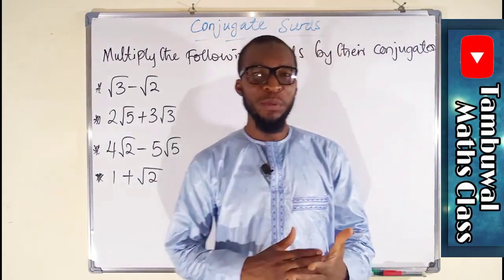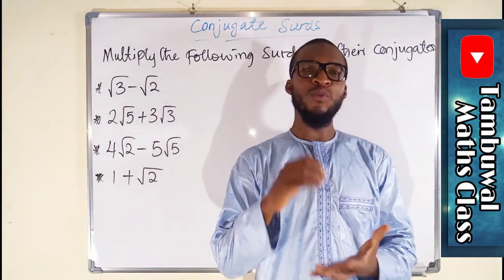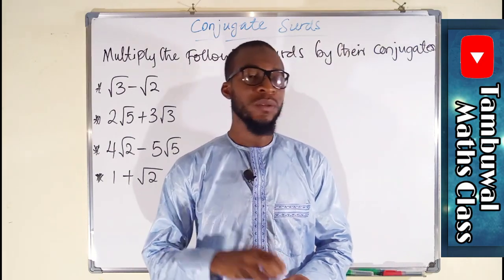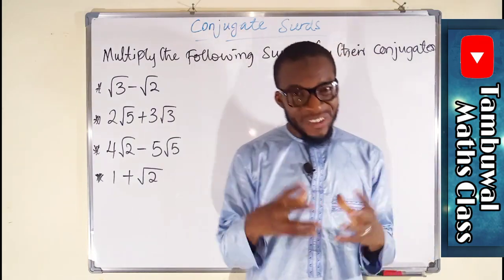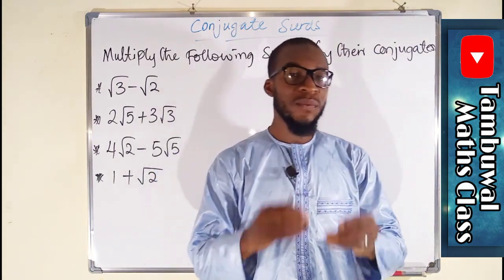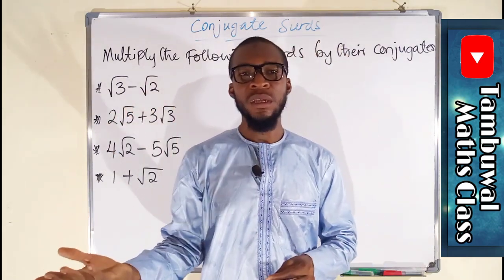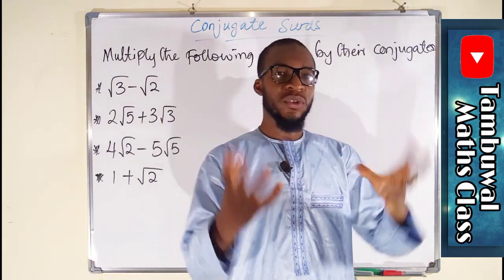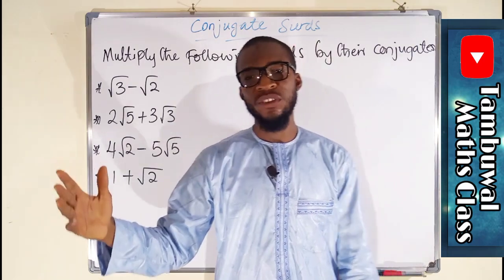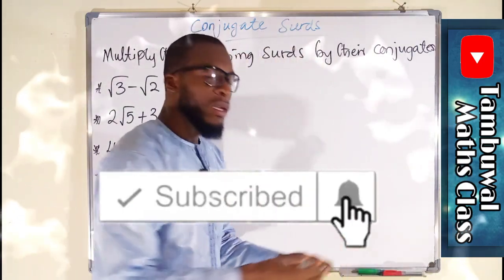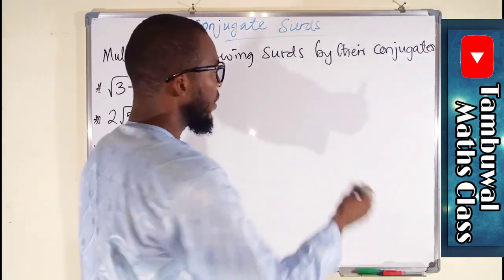In this tutorial we are going to multiply surds by their conjugates. But before then, let us discuss more about these conjugates. Two surds are said to be conjugate of one another if and only if their product gives rise to a rational number, because surds are said to be irrational, but their product — if they are conjugates — gives rise to a rational number. The best way to explain this is by the use of difference of two squares.